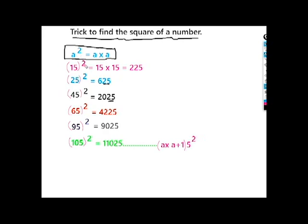For example, 15 squared. 15 times 15, which is 225. If you look at this, it means 5 squared is 25. It means 1 times 2, beside 1 times 2, 5 squared is 25.